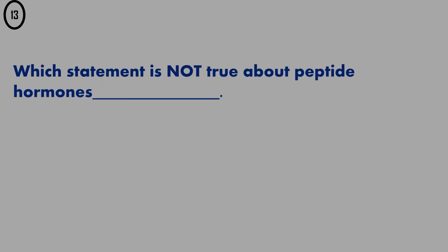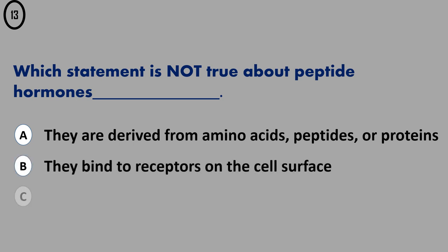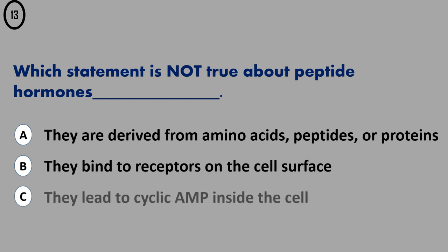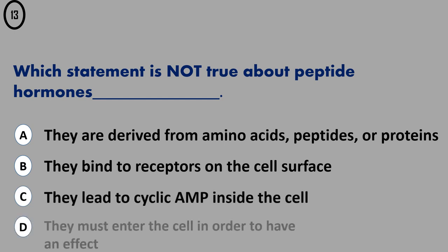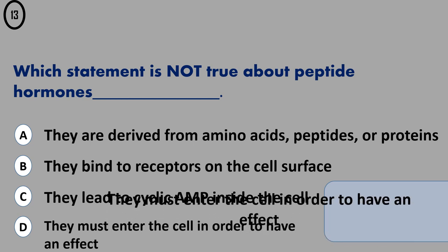Question 13. A. They are derived from amino acids, peptides, or proteins. B. They bind to receptors on the cell surface. C. They lead to cyclic AMP inside the cell. D. They must enter the cell in order to have an effect. The correct answer is...